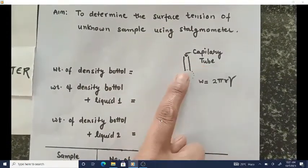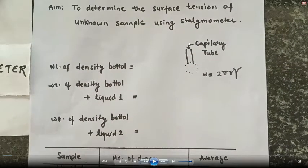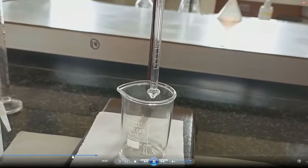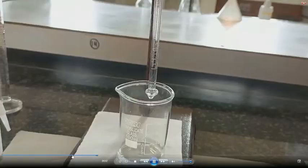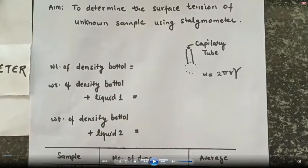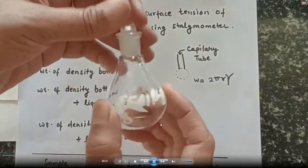Here we have a capillary tube. As discussed earlier, any liquid forms a drop which is spherical in shape. It is spherical because of surface tension. A drop falls when the weight of the drop is exactly equal to 2πr times surface tension (gamma, γ). This is how a drop falls — that weight is the weight of one drop.